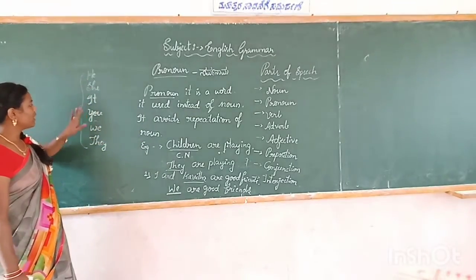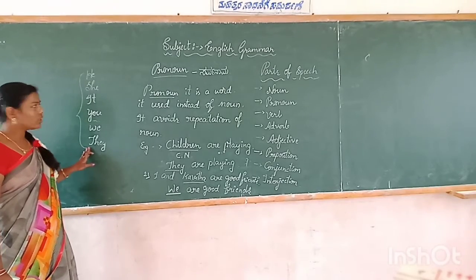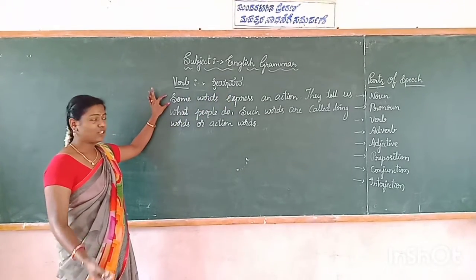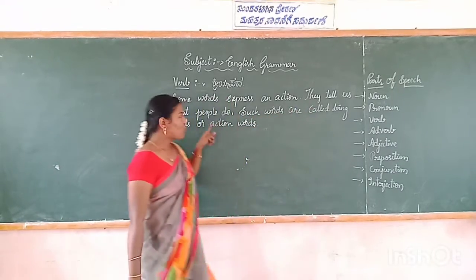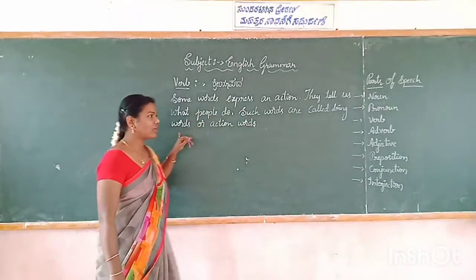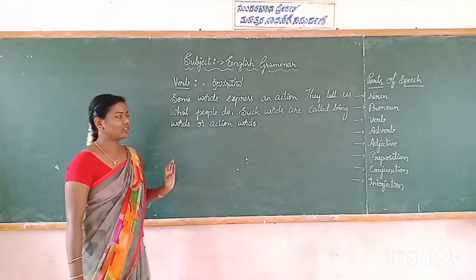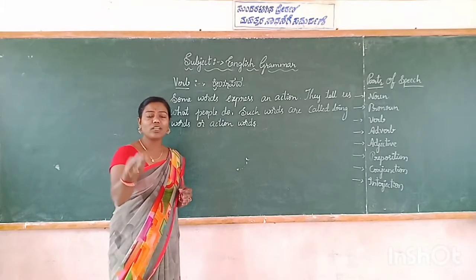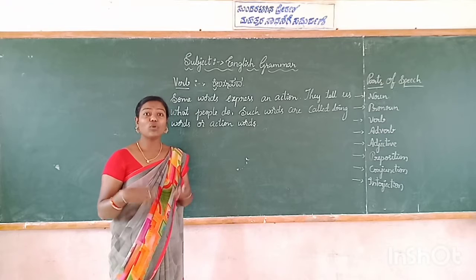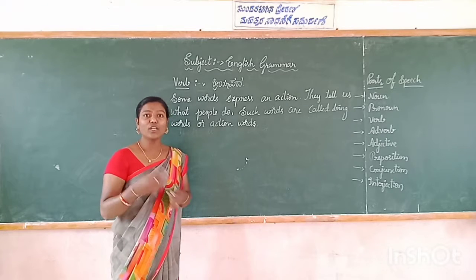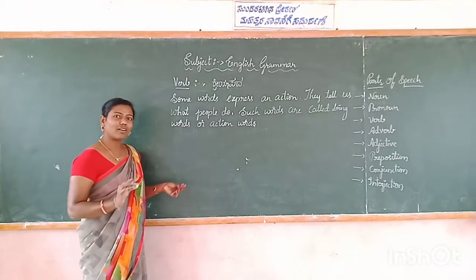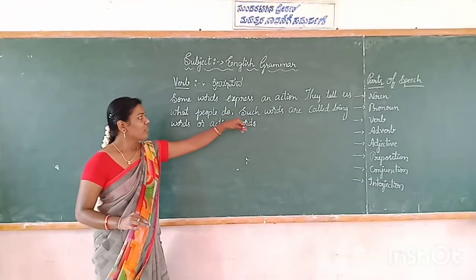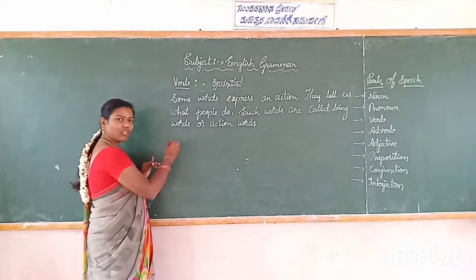And the pronouns are: he, she, it, you, we, they — these are called pronouns. Now, verb — some words express an action. They tell us what people do. Such words are called doing words or action words. What am I doing now? I am teaching. What are you doing? You are listening, singing, watching, writing, reading. So these all are called action words.